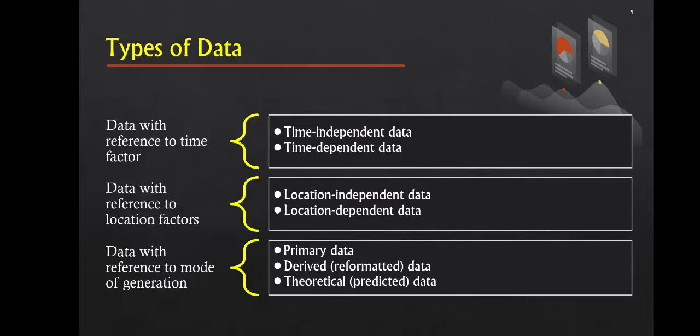Derived or reformatted data are generated by integrating multiple primary sources of information with the help of a theoretical model. Theoretical or predicted data use theoretical equations to arrive at conclusions. In scientific calculations, basic data such as fundamental constants are used. For example, data about solar eclipses are predicted using celestial mechanics.